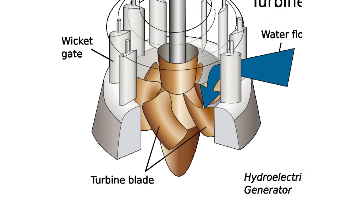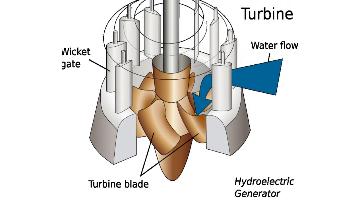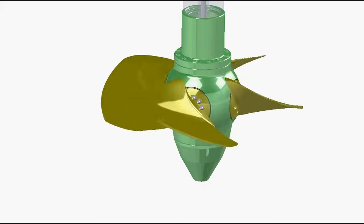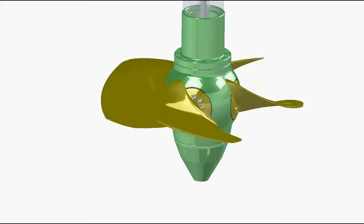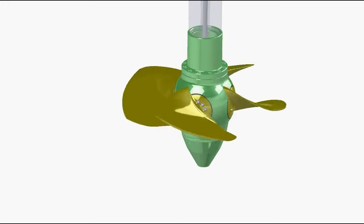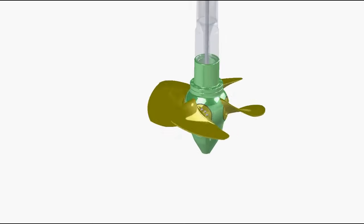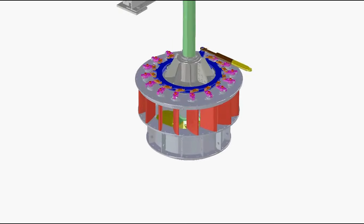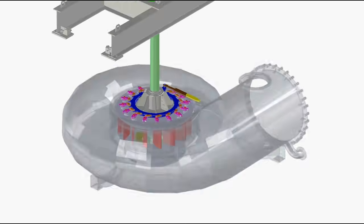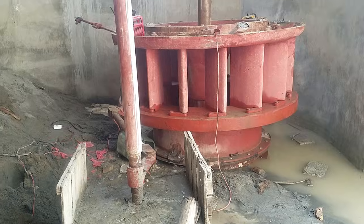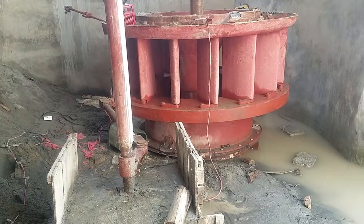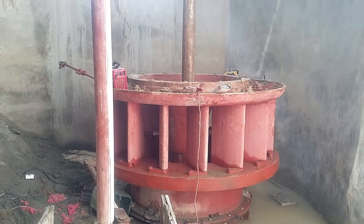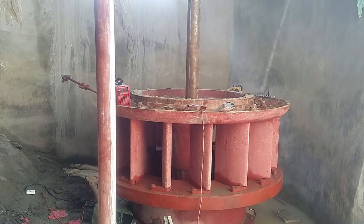Here are some characteristics of Kaplan turbines. Kaplan turbines are axial flow turbines, meaning the flow direction doesn't change as it passes through the rotor. They have a compact structure and are designed for low-head dams and run-of-the-river projects. Kaplan turbines are highly efficient due to their double regulation.